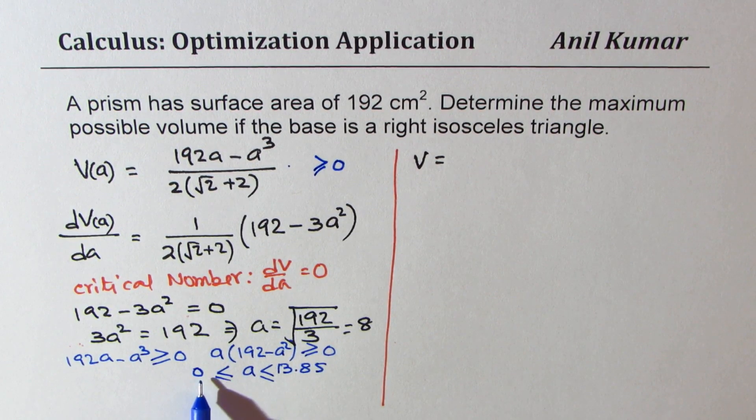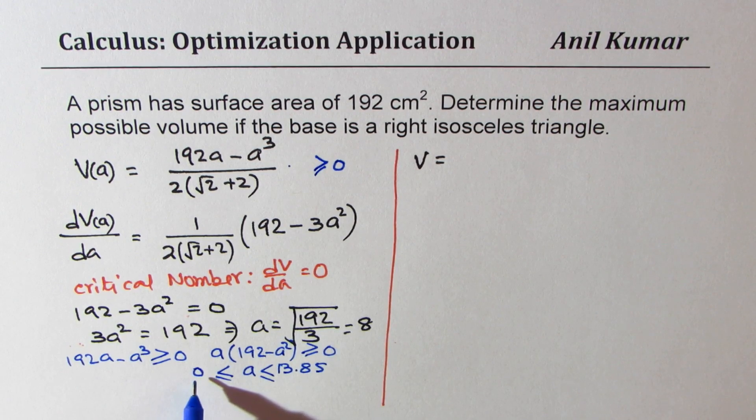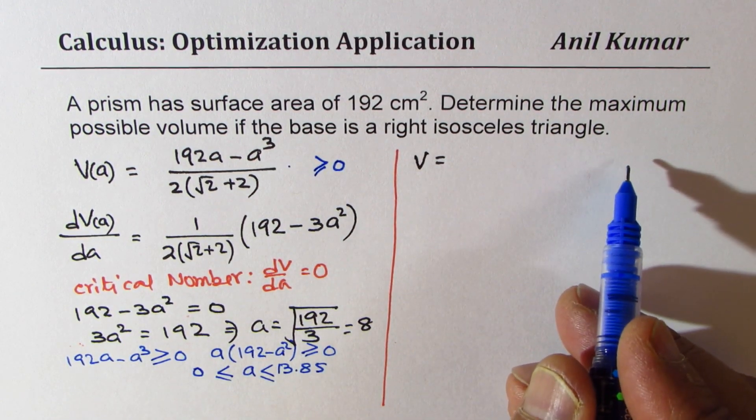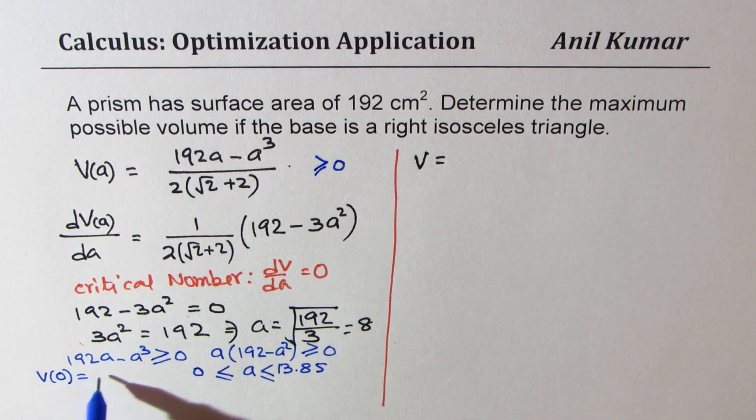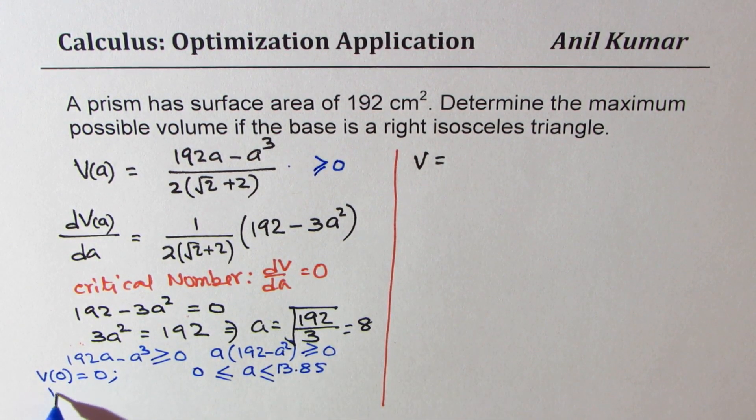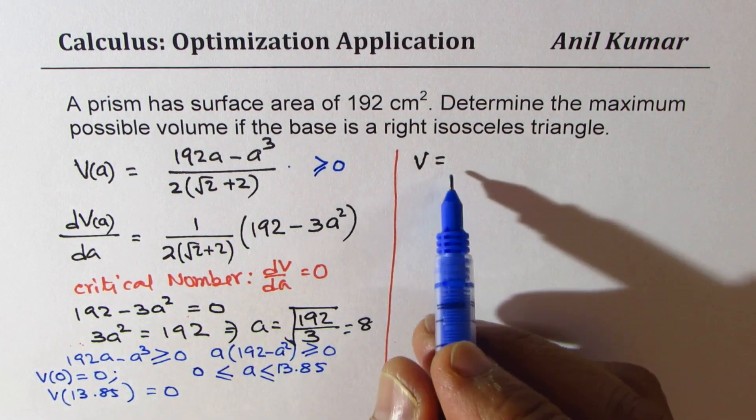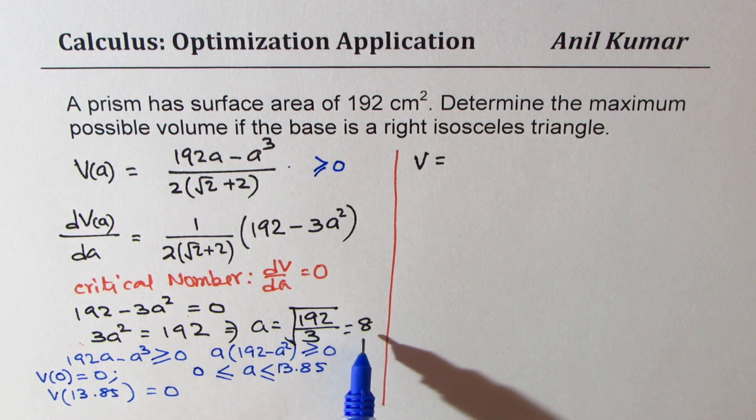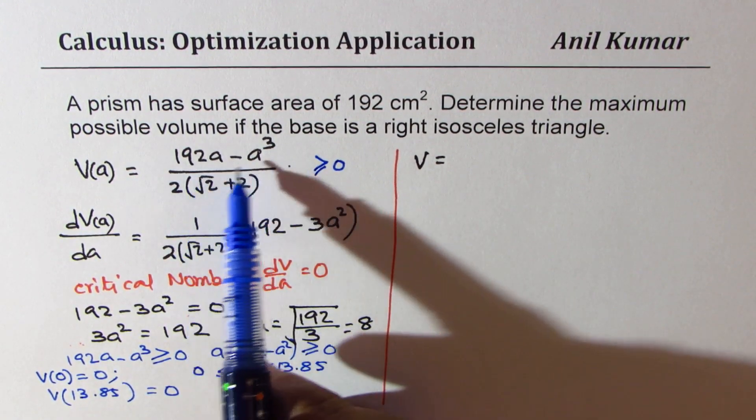So we can actually also find volume when a equals 0. So we know from here volume when a equals 0 is 0. And if I write 13.85, then also it will be 0. So whatever we get here will be a maximum. Since we know volume at 0 will be 0, and we also know that volume at 13.85 is also 0, so this value, the volume at a equals to 8 should be maximum. So we are going to substitute 8 here now and calculate.